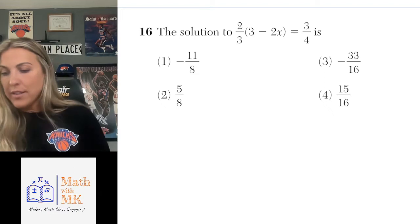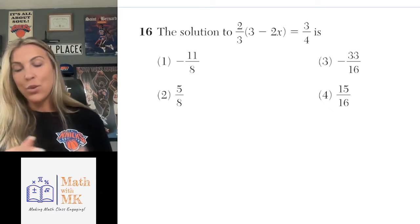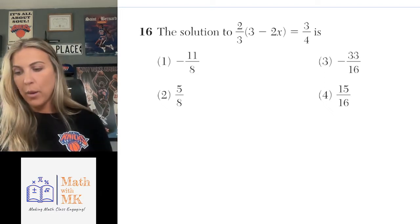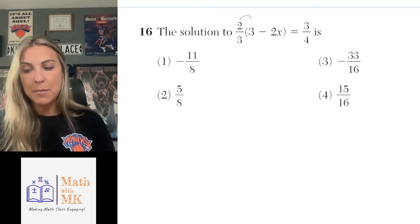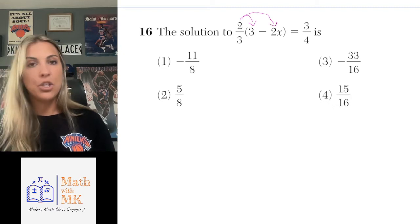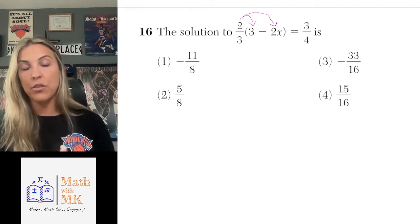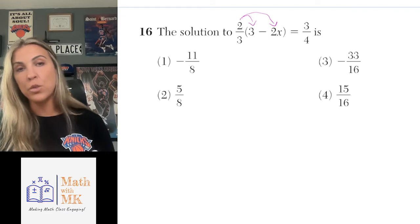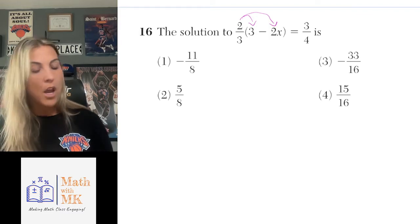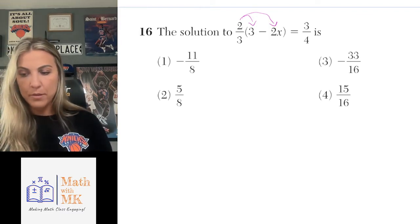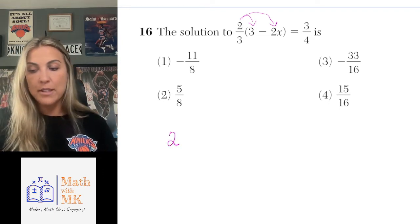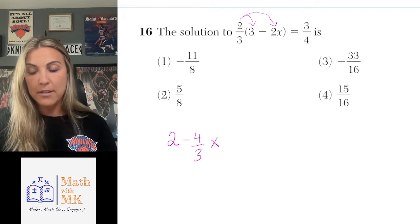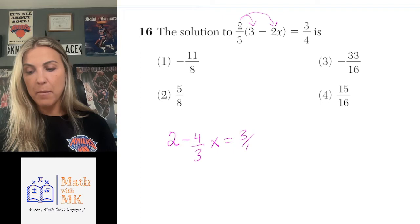Number 16 has us solving a linear equation. I like to distribute first when that's present. This 2/3 outside the parentheses is being distributed to each term inside — I know because there's no operation between the 2/3 and the parentheses. So 2/3 times 3 gives me positive 2, and 2/3 times negative 2x gives me negative 4/3 x. Bring down the equal sign and the 3/4.